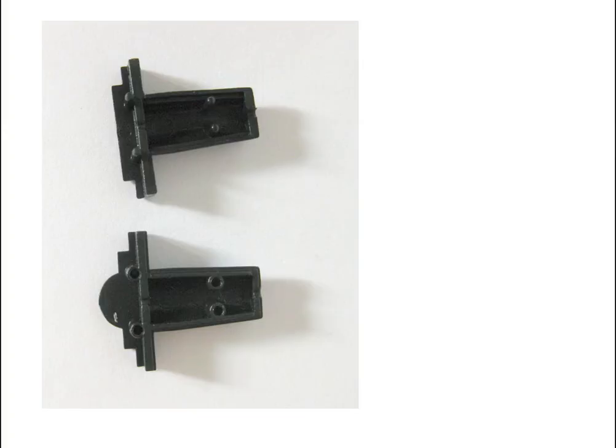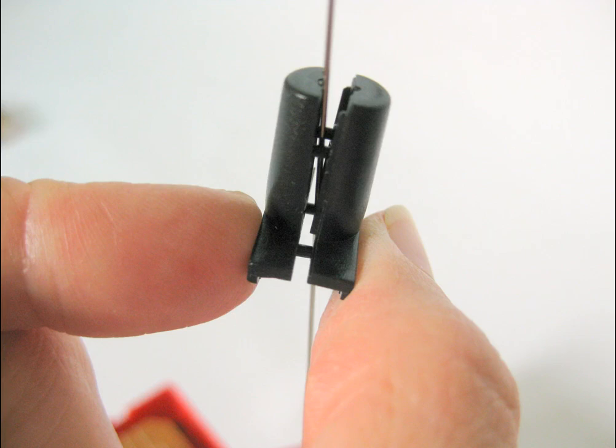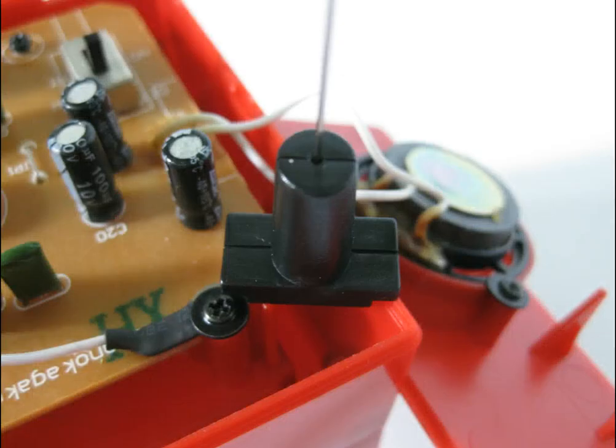Next remove the small black antenna holders from the kit. This is what they look like. Attach the antenna holders around the antenna and snap them together. Let the snap together antenna holder sit on the antenna for now.